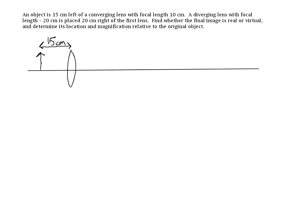The first thing we should do is sketch out the situation described in the problem. We have an object located 15 centimeters away from a converging lens with a focal length of 10 centimeters. Twenty centimeters to the right of that, we have a second lens. This one is a diverging lens, so it has a negative focal length. The focal length of lens 2 is equal to negative 20 centimeters.